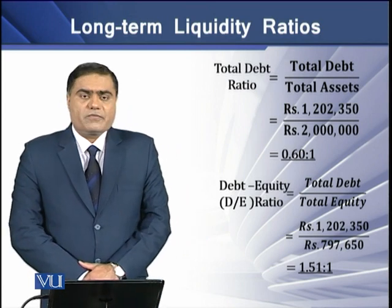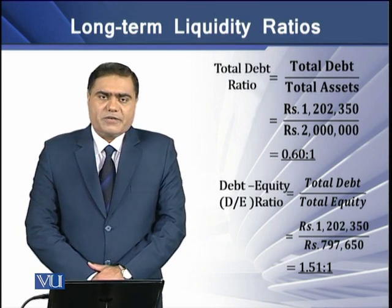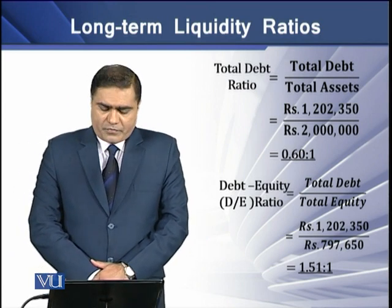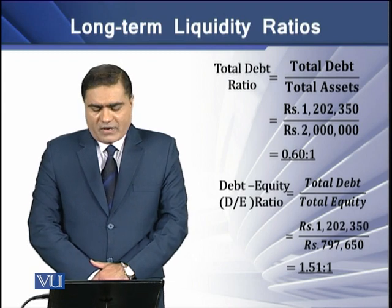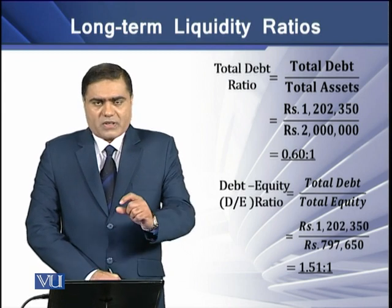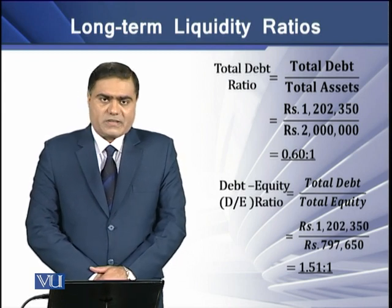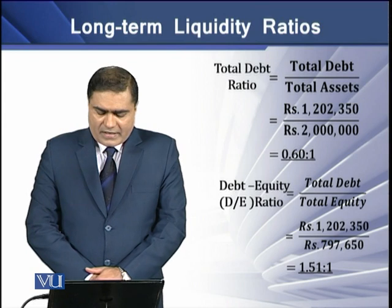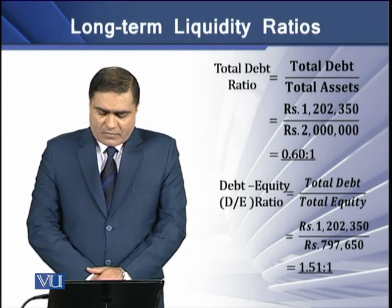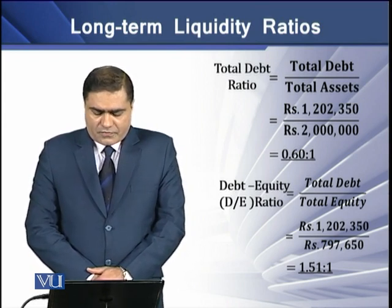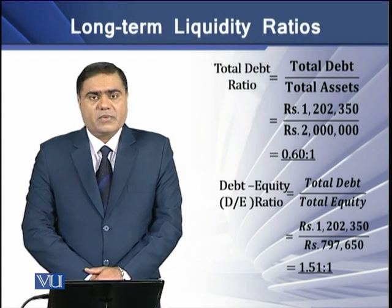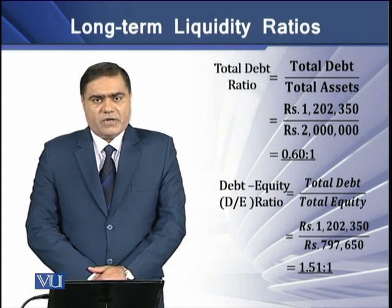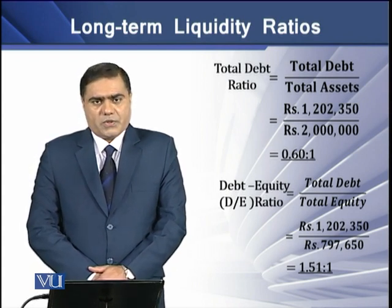In this class, we have the total debt ratio. To determine the total debt ratio of a firm, we divide its total debt by its total assets. Let's take an example: if a firm has a total debt of 1.2 million and total assets of 2 million, we divide total debt by total assets.